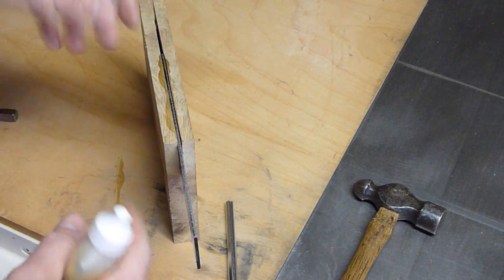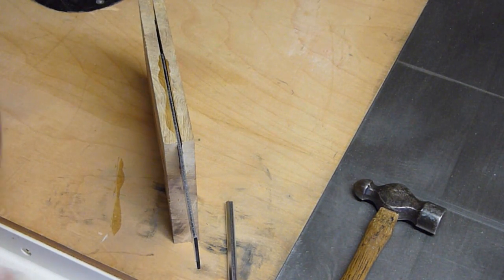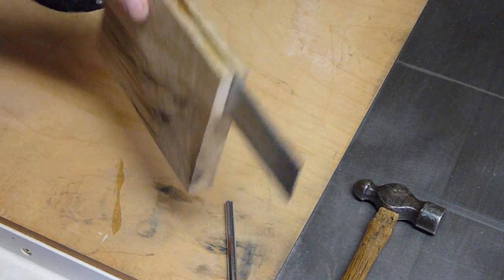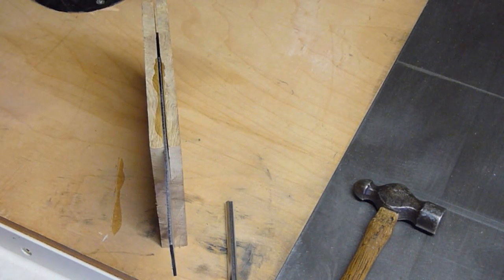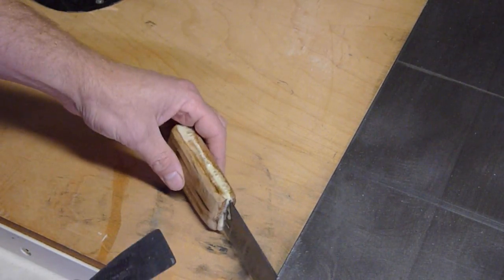And it will expand out and come out around the blade there. That Gorilla Glue is nice, it'll bond to wood and metal. Alright, here we go, it's all set up.